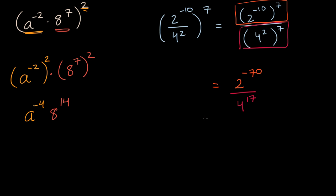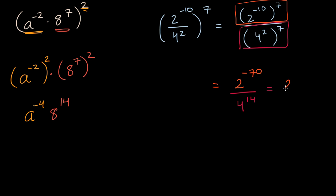We can actually think about simplifying this even more. One thing you could do is note that four is a power of two. So you could rewrite this as two to the negative 70th power over, instead of writing four to the fourteenth power, write two squared to the fourteenth power, since four is the same thing as two squared. And so now I can rewrite this whole thing as two to the negative 70th power over two to the second and then that to the fourteenth — well, that's two to the twenty-eighth power.